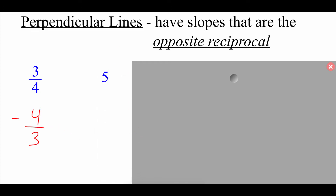If we had five — five itself doesn't look like a fraction, but we can turn any number into a fraction by putting it over one. So we do the opposite reciprocal: first flip that fraction over to get one-fifth, but then we do the opposite. We started with a positive number, so we have to make this a negative number — negative one-fifth.